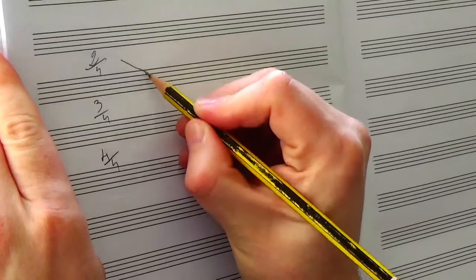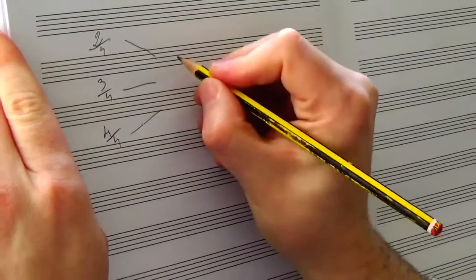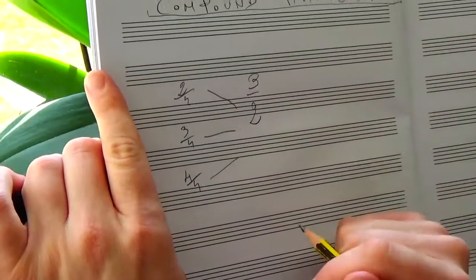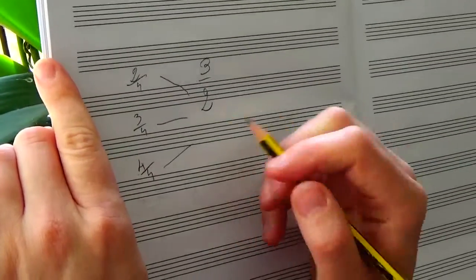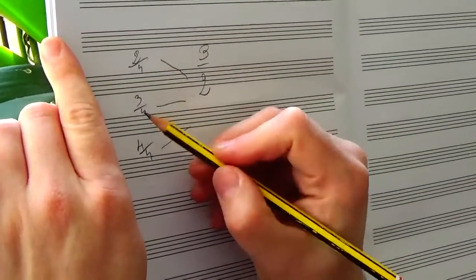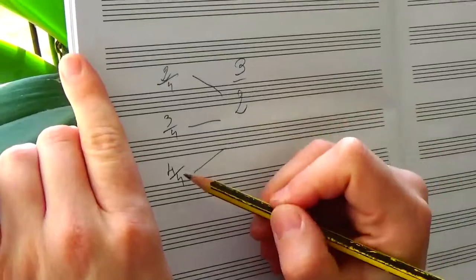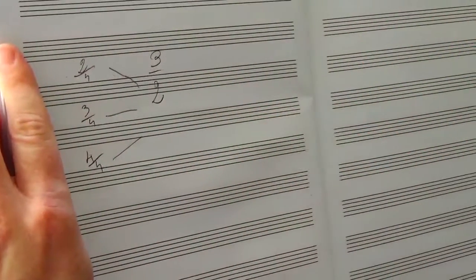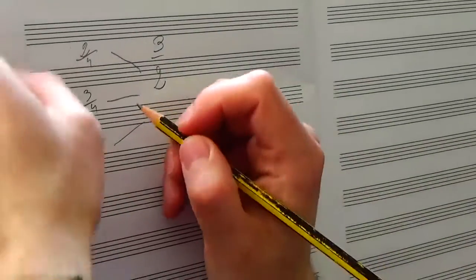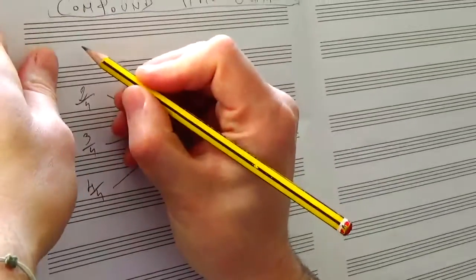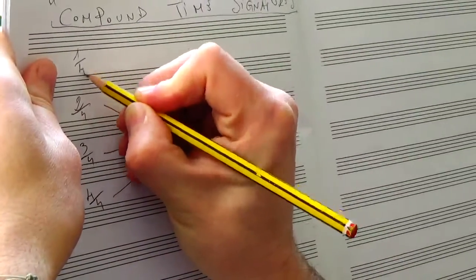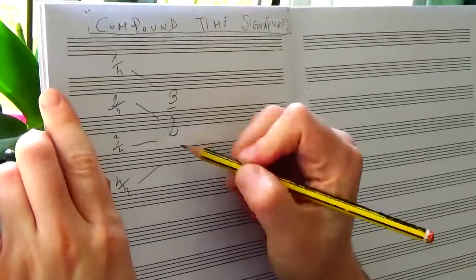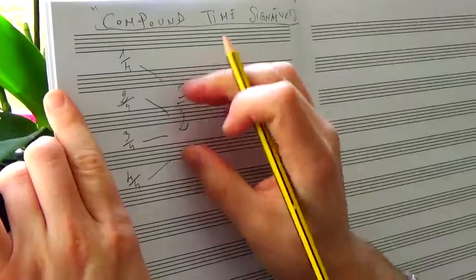We have to multiply all these numbers by 3 over 2 to get the relative compound time signature. So we have to multiply 2/4 by 3 over 2, 3/4 by 3 over 2, and same story with the 4/4, and we will get the relative compound time signature. I have to add today one that has never been mentioned previously, that is the 1 over 4, 1 fourth. You will understand why it's so important.